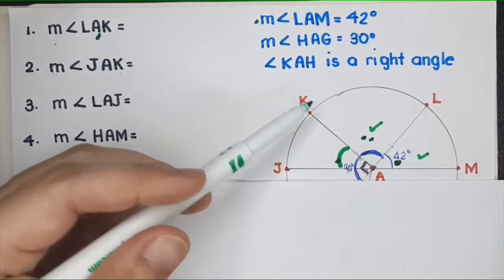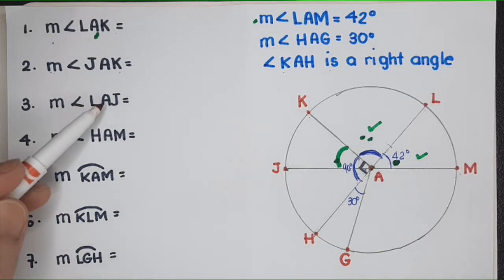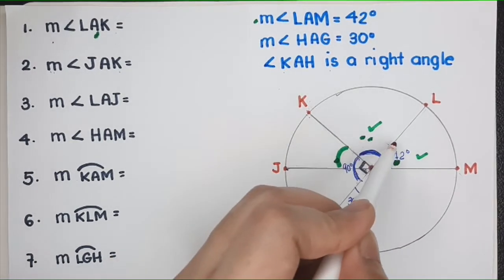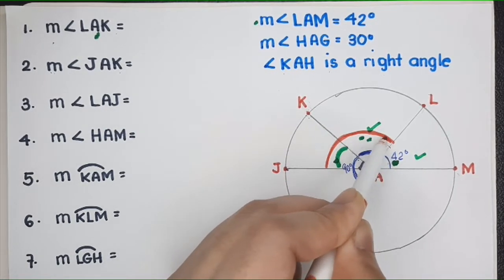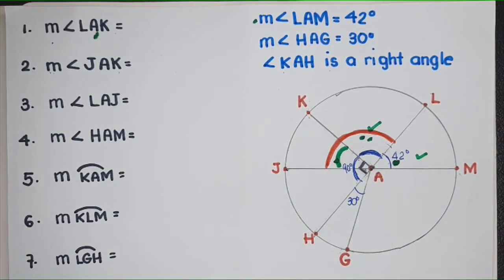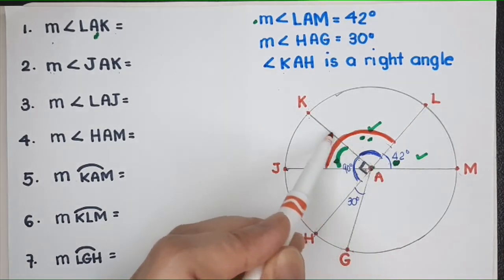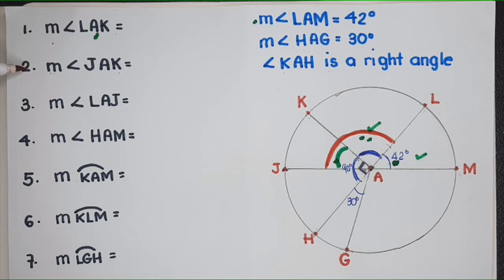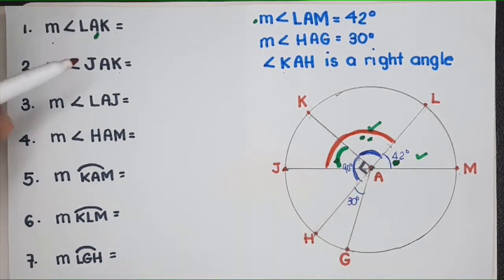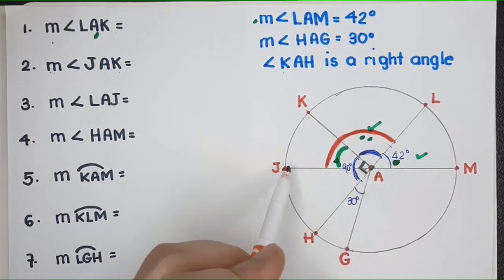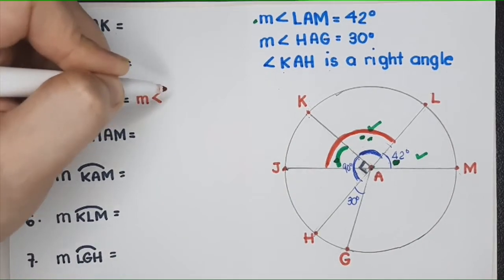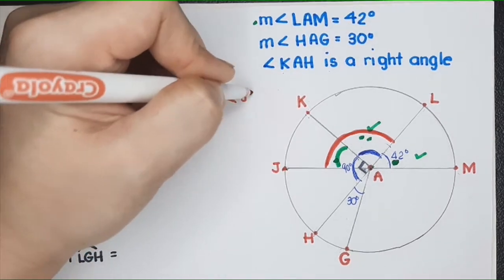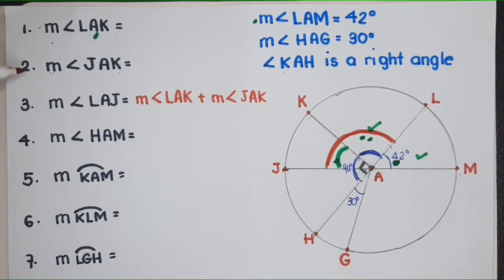What about the measure of angle LAJ? The measure of angle LAJ is equal to the measure of angle LAK plus the measure of angle JAK. So, just add the answers from number 1 and number 2.